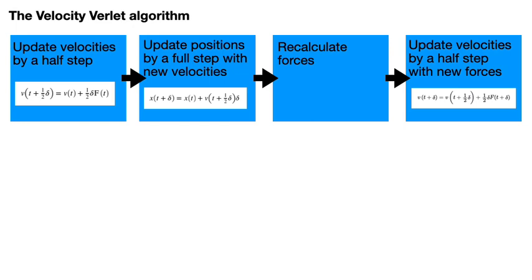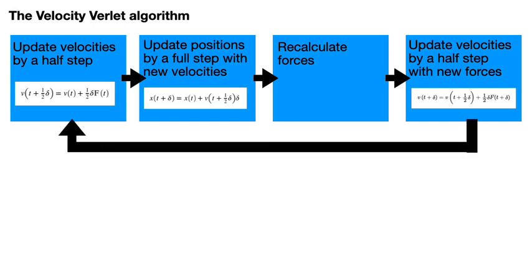At this point you now have the positions, velocities and accelerations at time t plus delta and you can return to the start of the loop and repeat these stages ad infinitum to get the positions, velocities and forces at times t plus 2 delta, t plus 3 delta and so on and so forth.